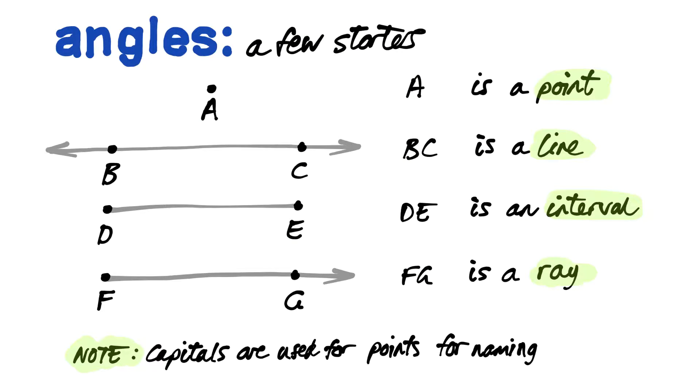To get started we should just get a couple of definitions right. Remember to use capital letters here. If we have A, it would be a point. BC is a line if the line carries on through the points. DE is an interval where it stops at each end. And FG is a ray where it starts from a point and goes through another point forever.